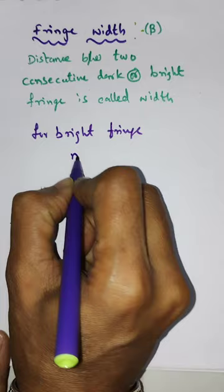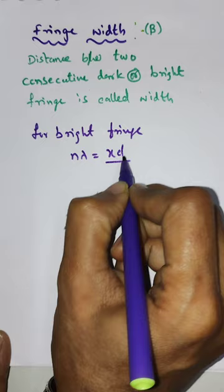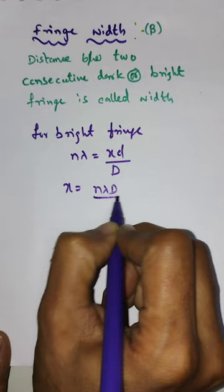To get the bright fringe, the path difference should be mλ = xd/D. So small d is the distance between two slits, capital D is the distance between the slit and the screen. So we can get the distance of the bright fringe.